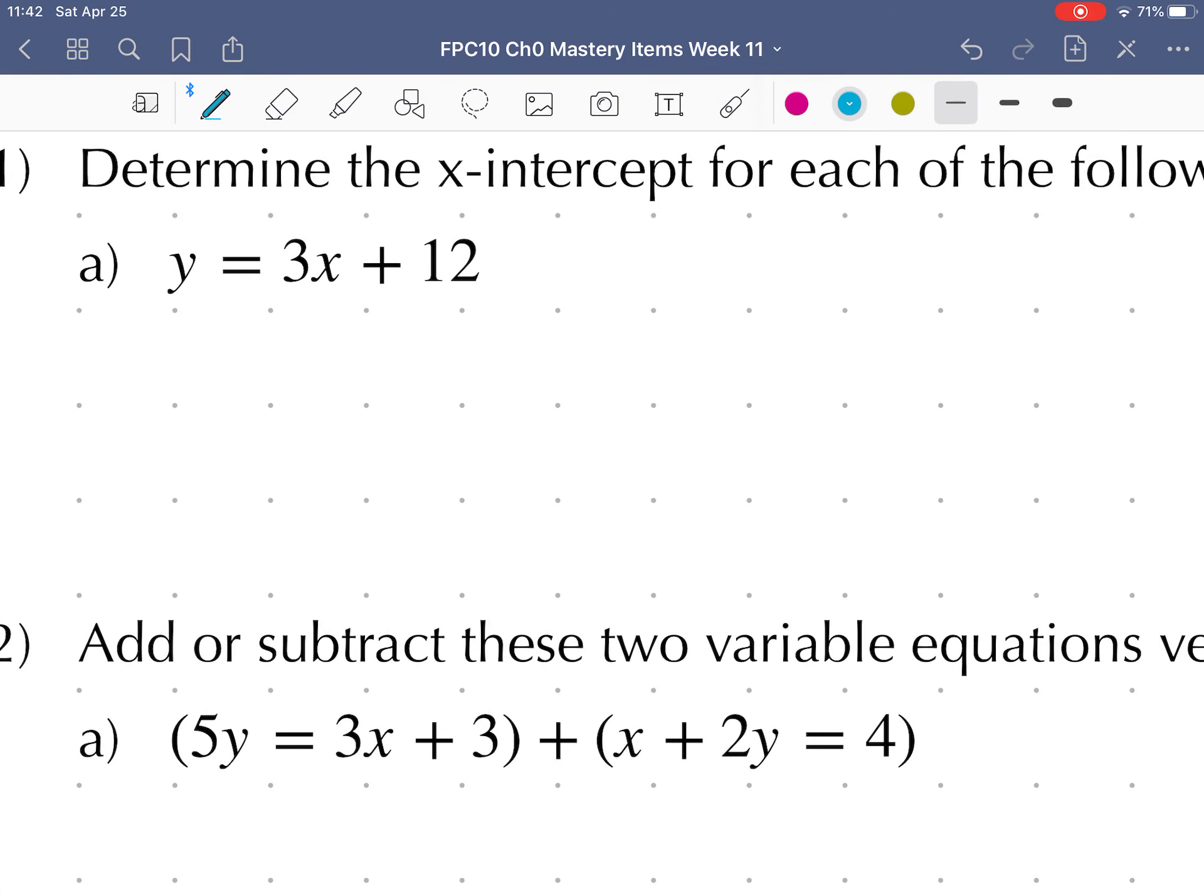So let's look at our first one. We're going to put in y is equal to zero. That will get us our x-intercept. So we put zero is equal to 3x plus 12. Now we need to isolate x to determine our x value. So minus 12 from both sides to get 3x equals minus 12. Divide both sides by 3 to get minus 4 equals x.